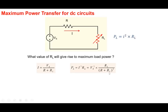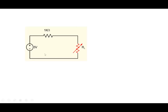To find the optimum value, we take the derivative of PL with respect to RL and equate it to zero. The condition under which this holds is RL equals R. We then substitute RL = R into the expression to obtain the maximum power that can be extracted. Maximum power transfer states that for maximum power to be transferred to the load, choose RL equal to R.